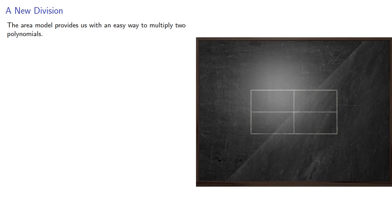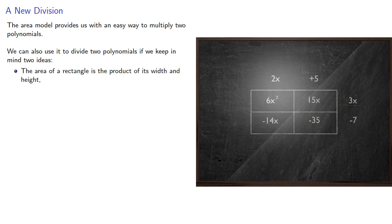The area model provides us with an easy way to multiply two polynomials. We can also use it to divide two polynomials if we keep in mind two ideas. The area of a rectangle is the product of its width and height.